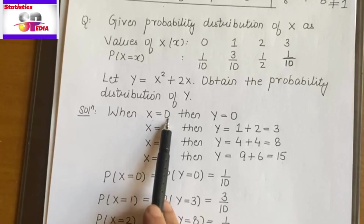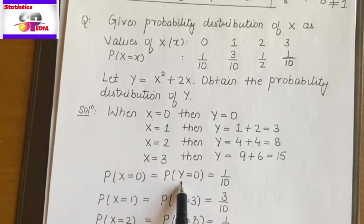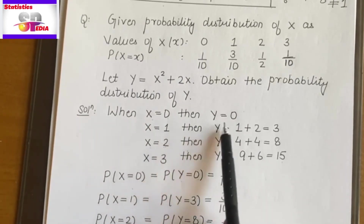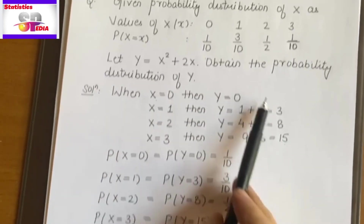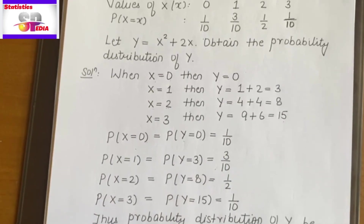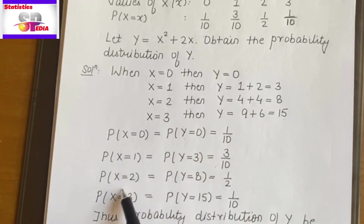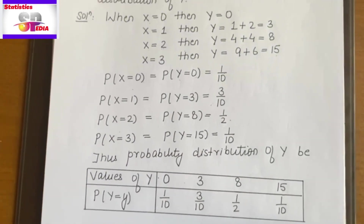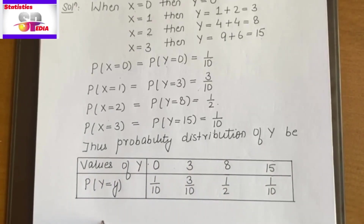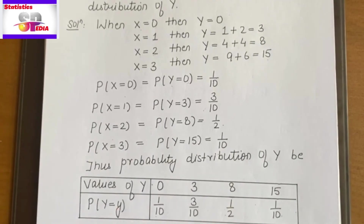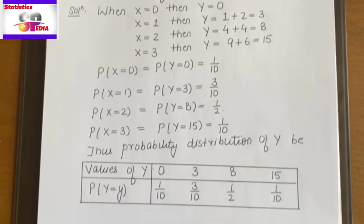Now building the PMF table for Y. When x=0, Y=0, and probability at x=0 is 1/10 — so probability Y=0 is 1/10. When x=1, Y=3 — probability at x=1 is 3/10, so probability Y=3 is 3/10. When x=2, Y=8 — probability is 1/2. When x=3, Y=15 — probability is 1/10. The entire table for Y is now obtained. You can verify: all probabilities are positive, and the sum is 1/10 + 3/10 + 5/10 + 1/10 = 10/10 = 1. This confirms the PMF of Y.